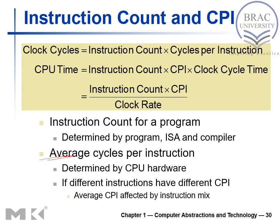If different instructions have different CPI, then the average CPI is affected by the instruction mix. In our architecture — MIPS, which we are going to study — we have three types of instructions: R-type, I-type, and J-type. If a program contains a mix of R-type, I-type, and J-type instructions, these different instruction types have different time requirements for execution, resulting in a different overall time requirement for that instruction mix.